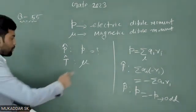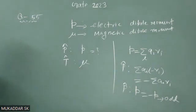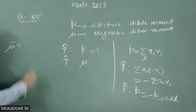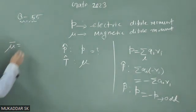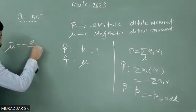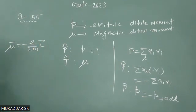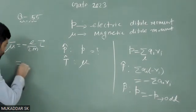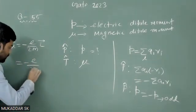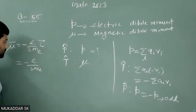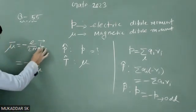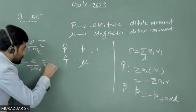Now let us see what will happen to the magnetic dipole moment. The magnetic moment can be represented as minus e over 2m times L, where L is the orbital angular momentum. And L can be written as R cross P.